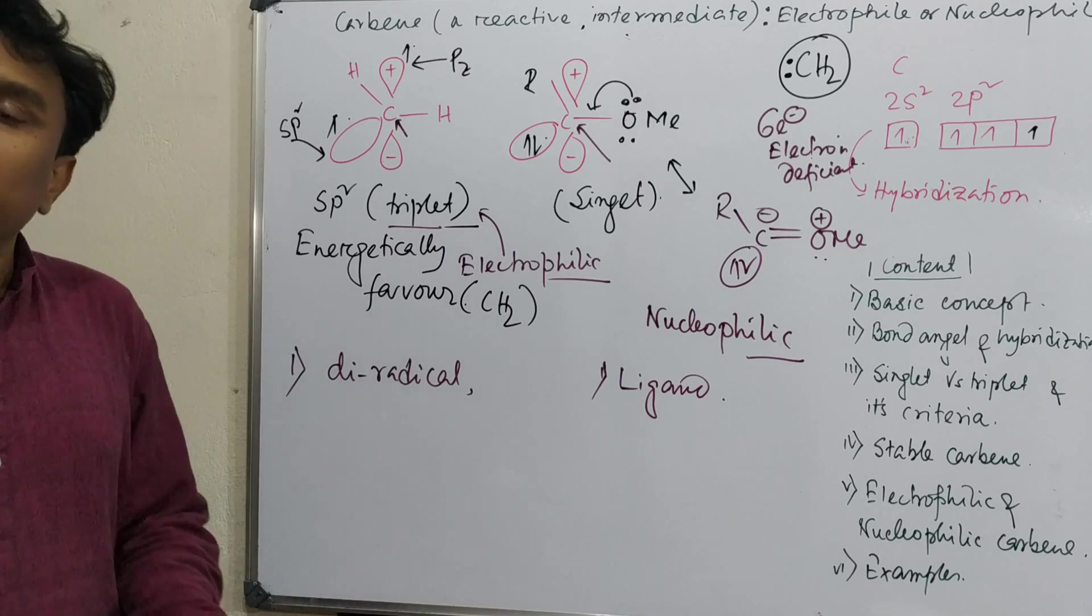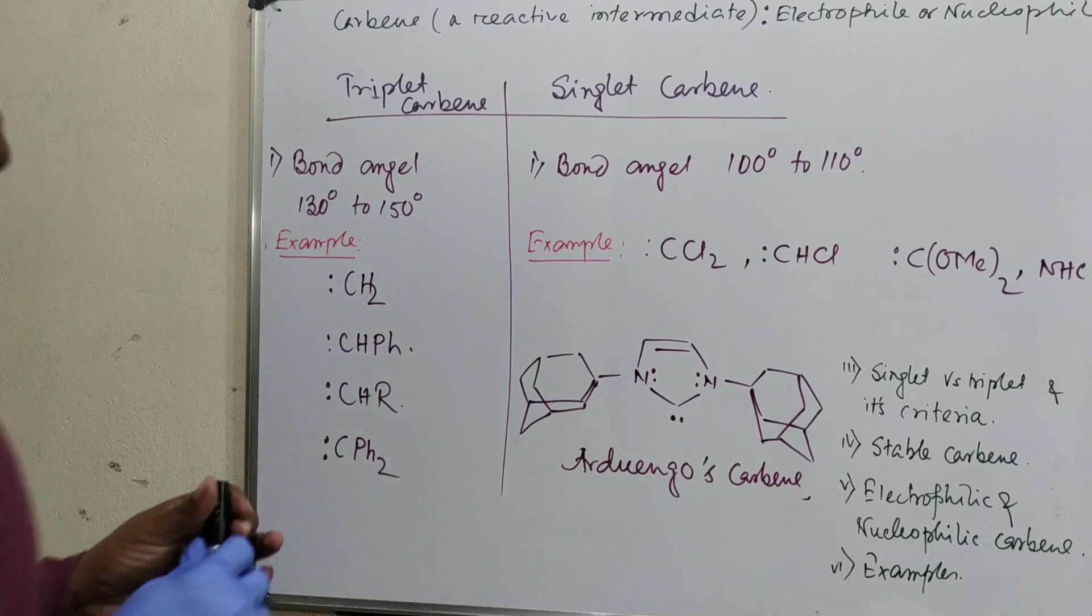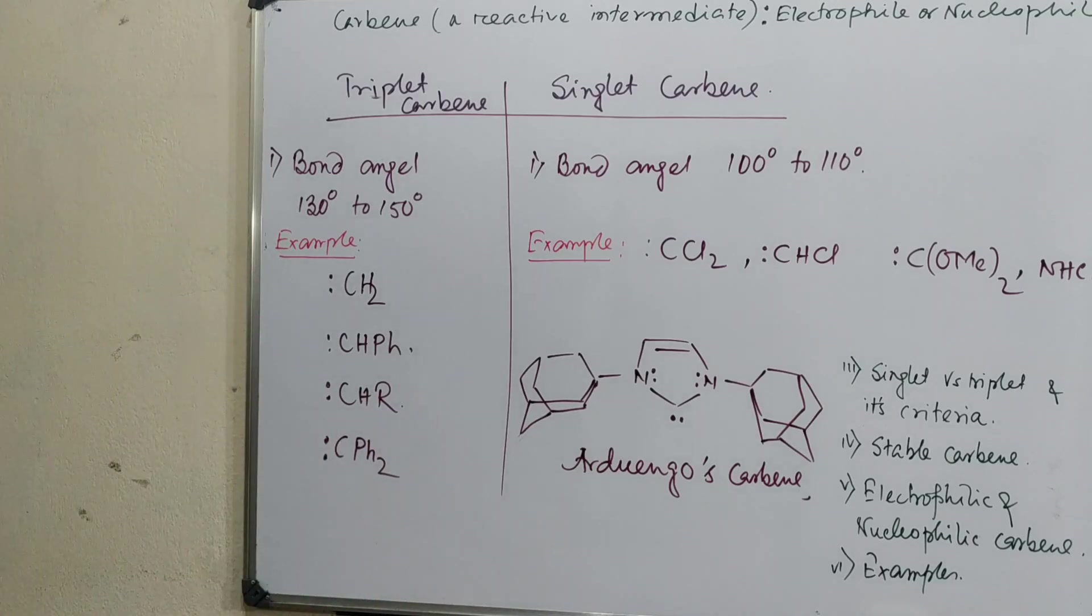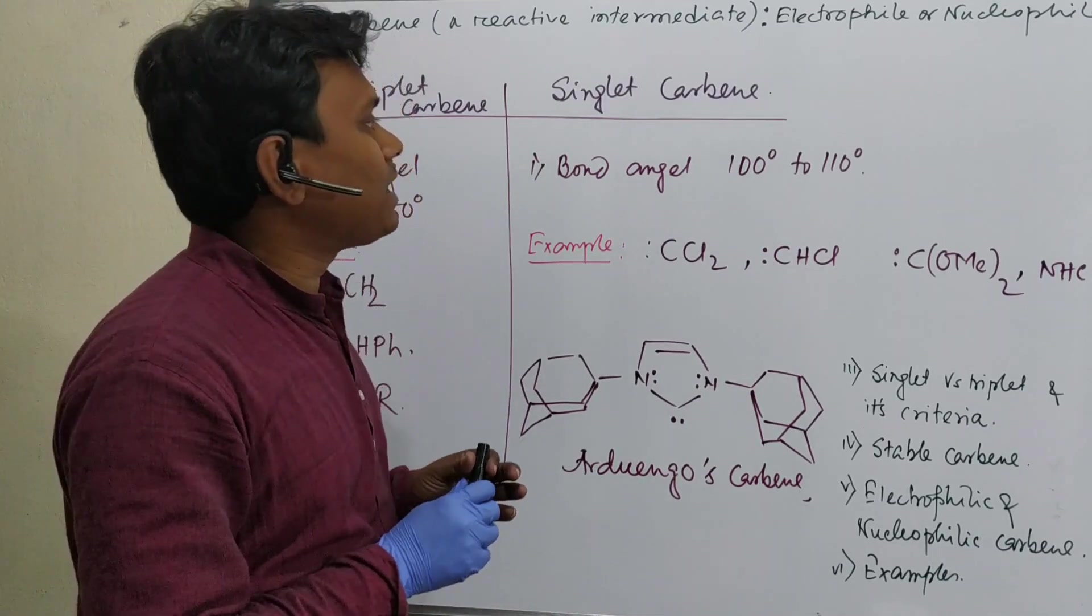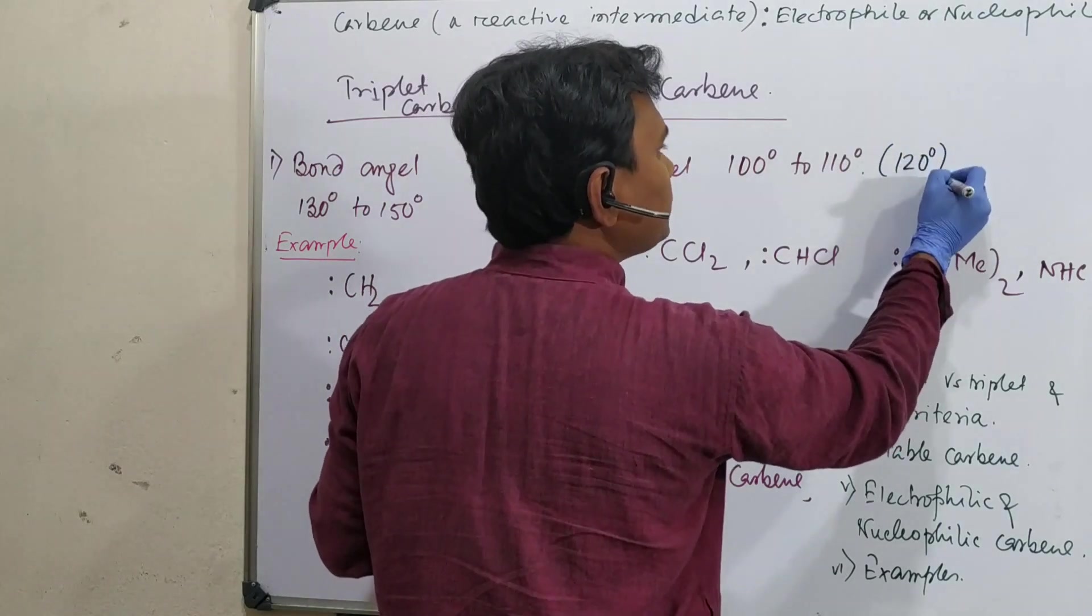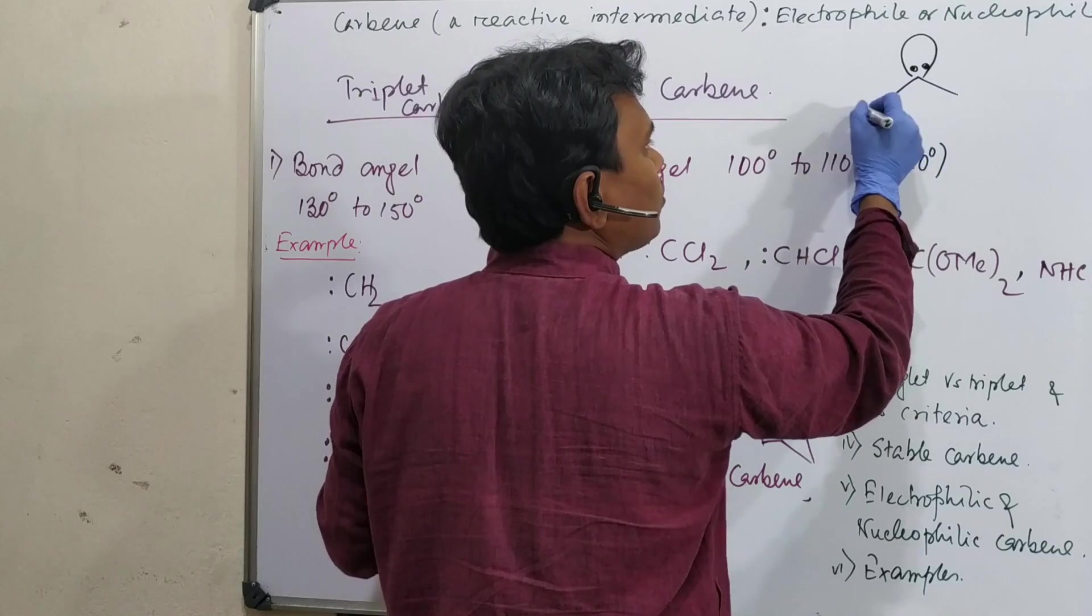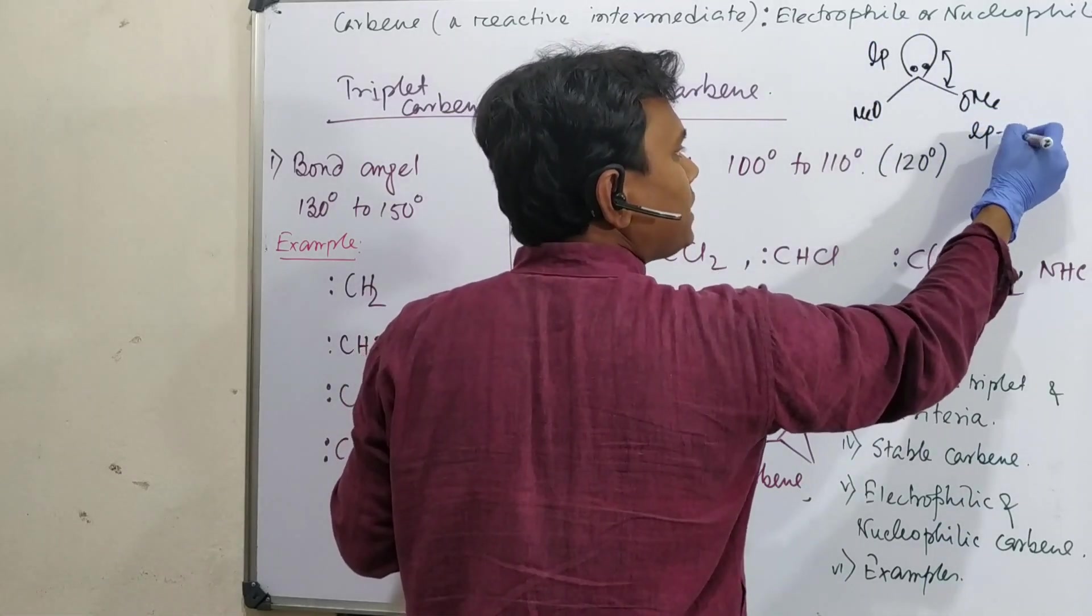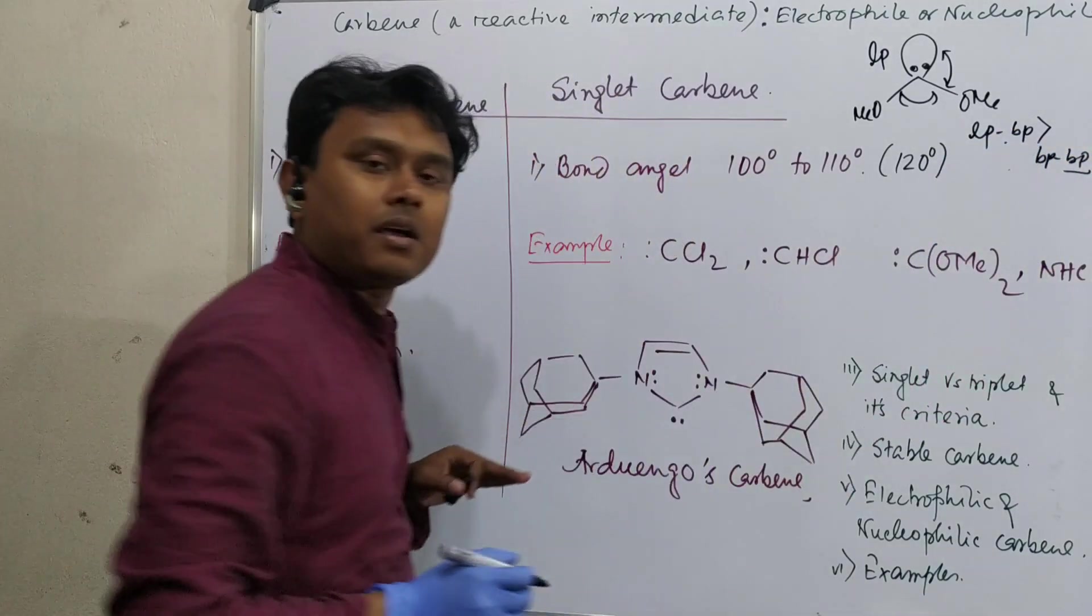Now let's discuss some examples. First of all one important point I forgot to mention: the bond angle. The bond angle of triplet carbene is around 130 to 150 degree. But for singlet carbene the bond angle is 110 degree. Why is this less? Actually this is sp2 hybridized so angle is expected to be 120 degree. But this lone pair bond pair repulsion is greater than bond pair bond pair repulsion according to VSEPR theory.